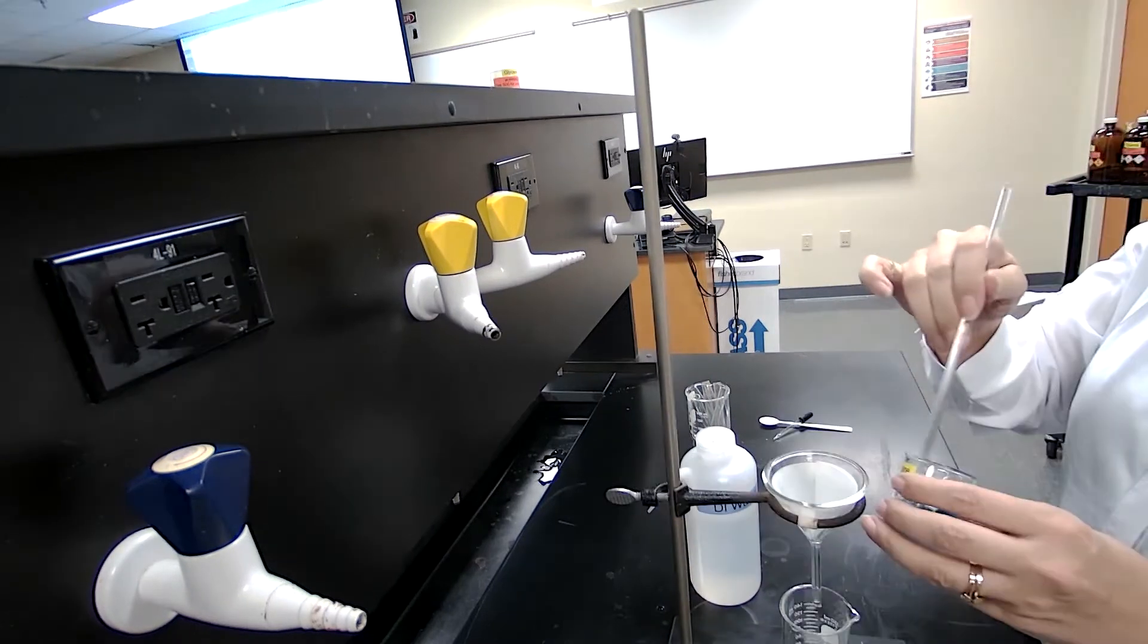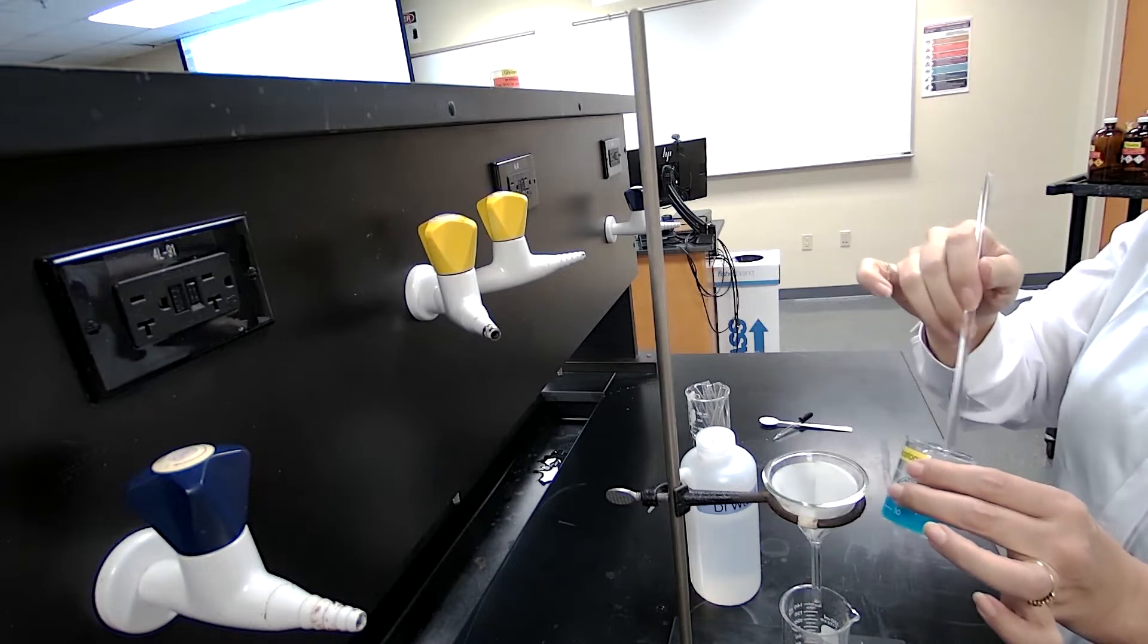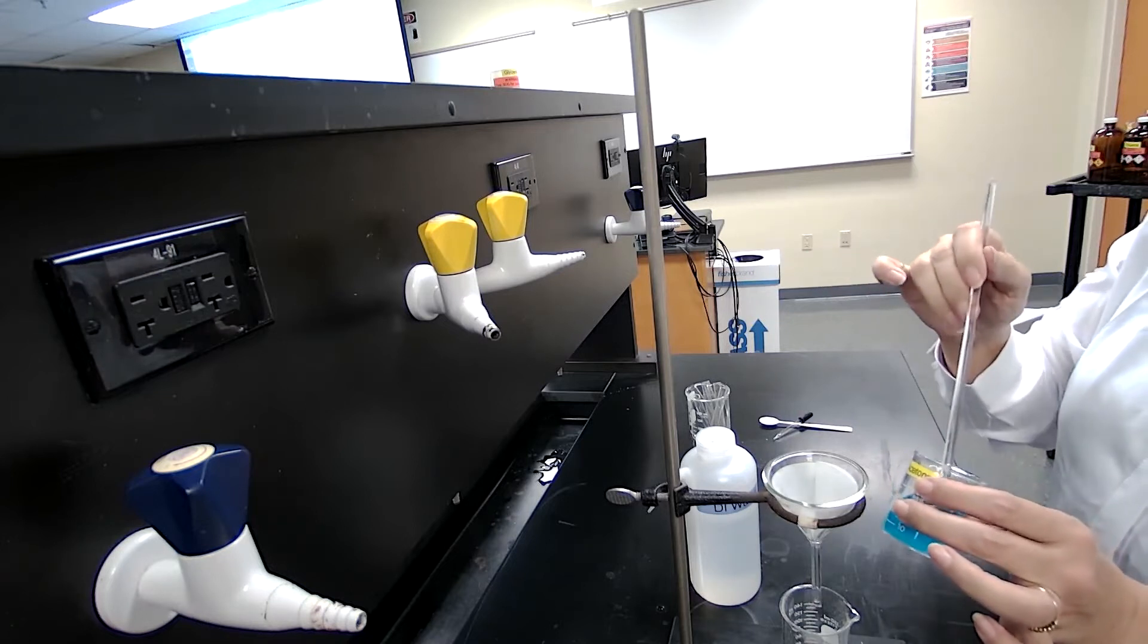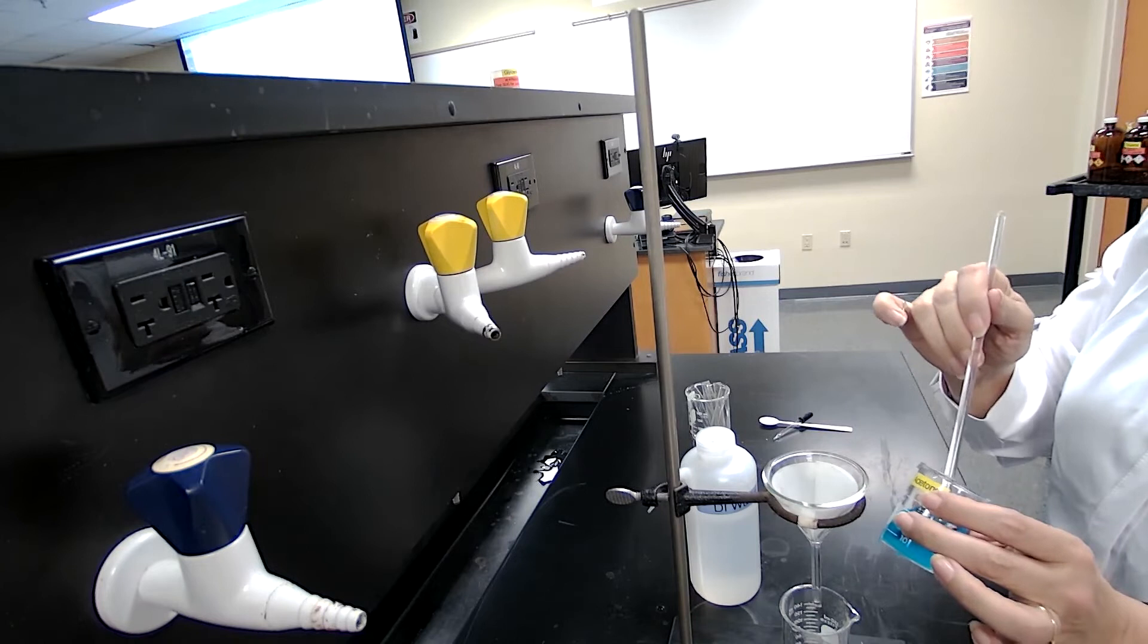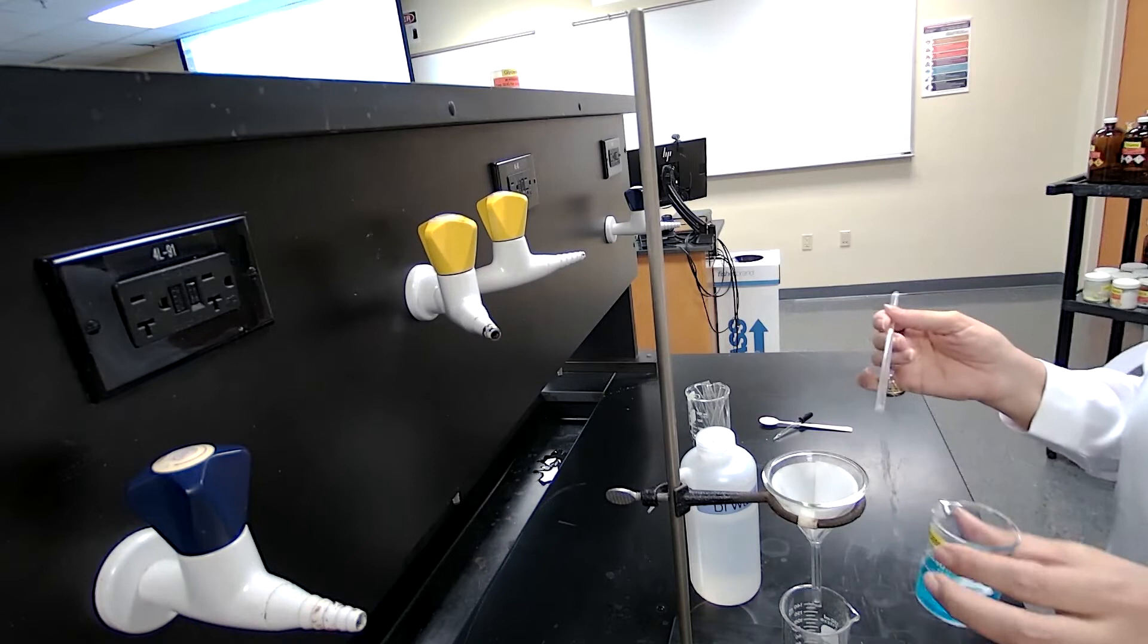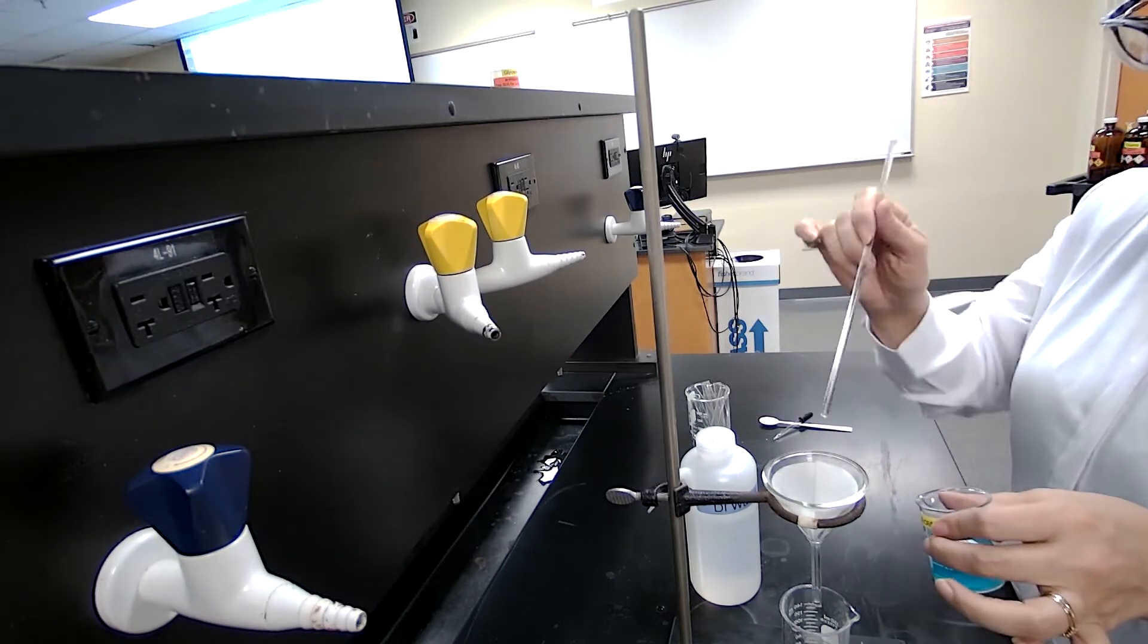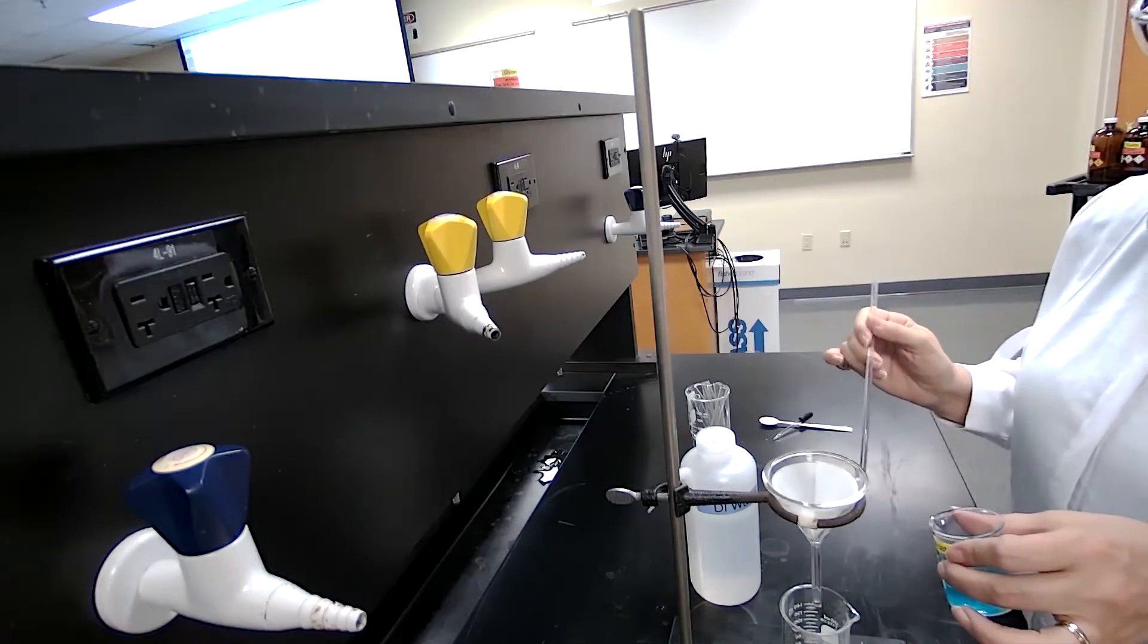Gravity filtration is different from decanting. Decanting is another technique which we will talk about in different experiments. But here we are doing filtration. We want to separate the solid from the liquid. We want the solid to stay on the filter paper and the liquid to pass through the filter paper.